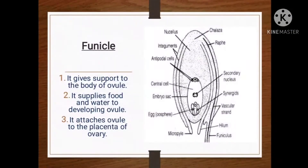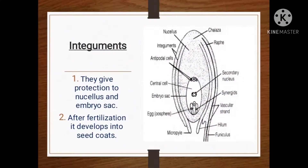Functions of various parts of the ovule: First, the funicle — it gives support to the body of the ovule, it supplies food and water (nutrition) to the developing ovule, and it attaches the ovule to the placenta of the ovary. The integuments give protection to the nucellus and embryo sac. After fertilization, integuments develop into the seed coat. The pollen tube can also enter inside the ovule through the integuments — when this happens, it is known as mesogamy.